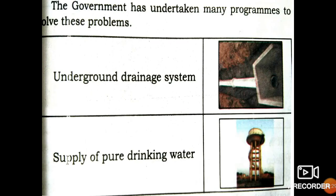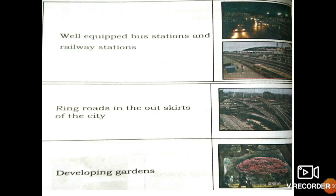In order to solve these problems, the government has undertaken many programs. An underground drainage system has been constructed. Supply of pure drinking water has been initiated by the government so that people can maintain their health and hygiene. Well-equipped bus stations and railway stations have been implemented. Ring roads in the outskirts of the city have been developed for making transportation easy.